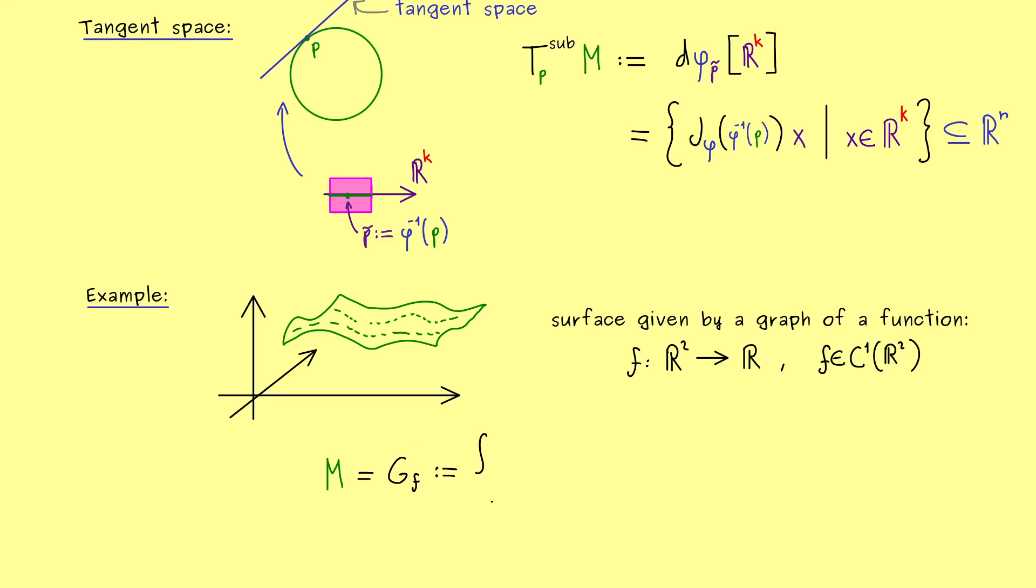It is simply defined as all the points the function describes. More precisely, here we have two inputs x and y and one output f. Together they form a point in the three dimensional space. If we go through all the points (x,y) in R^2, we get the whole graph. So not a complicated notion, but it makes a very nice manifold because we only need one chart.